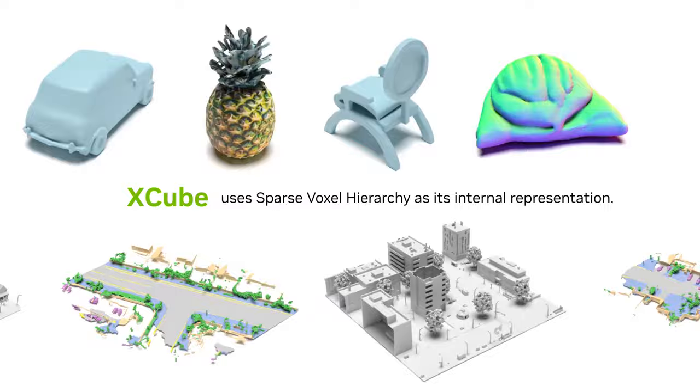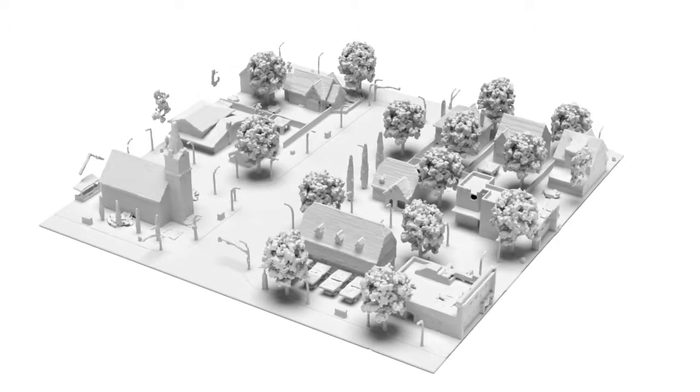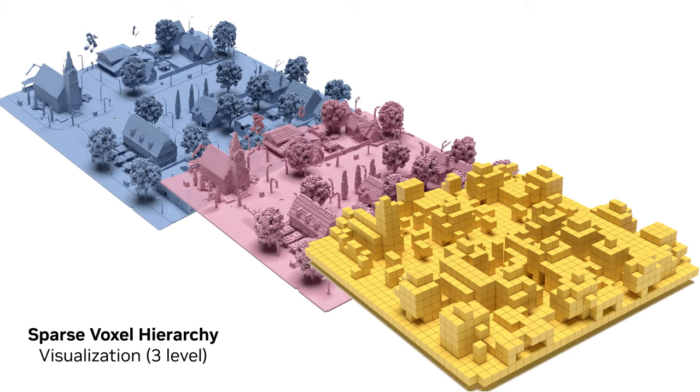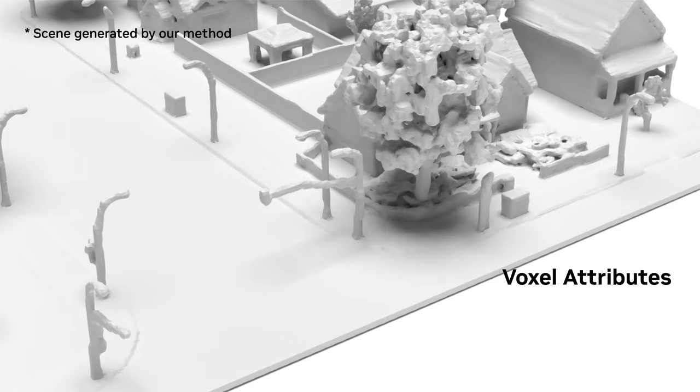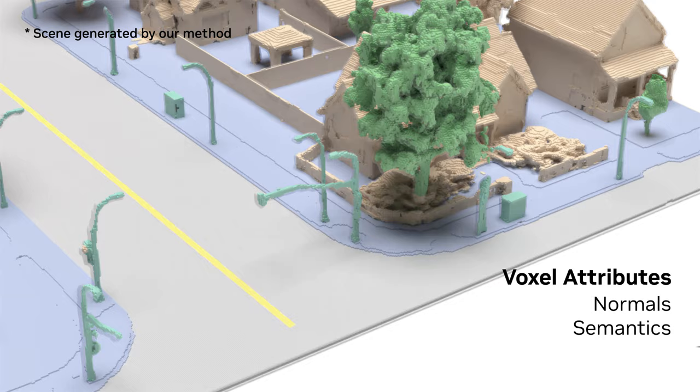A sparse voxel hierarchy is a sequence of coarse-to-fine 3D sparse voxel grids such that every fine voxel is contained within a coarser voxel. Each voxel in the hierarchy can store arbitrary attributes such as subdivision masks, normals, semantics, and continuous truncated signed-distance fields.